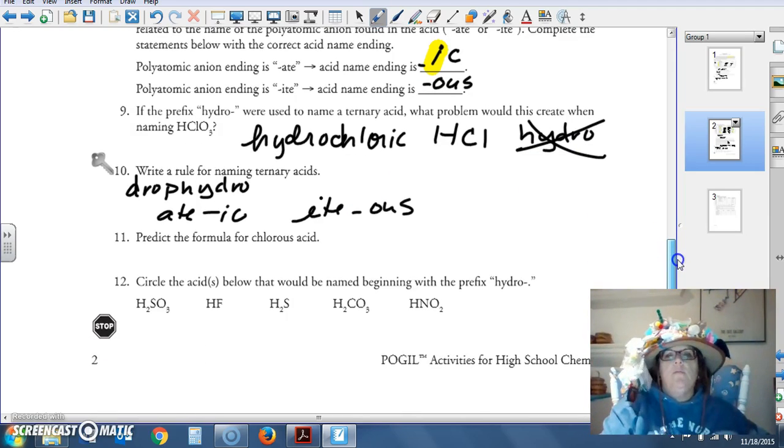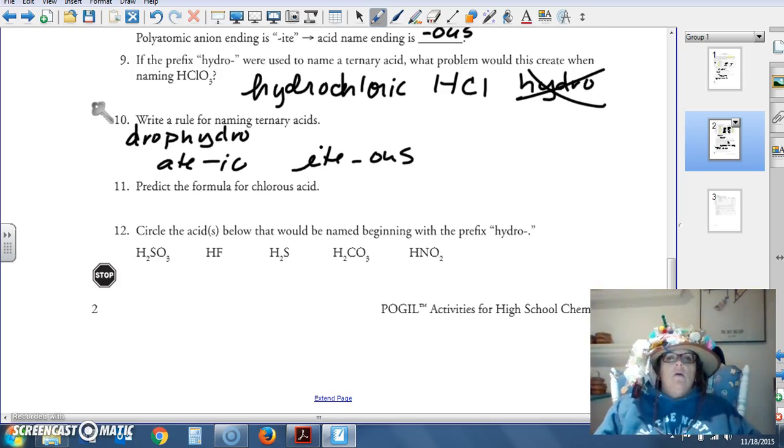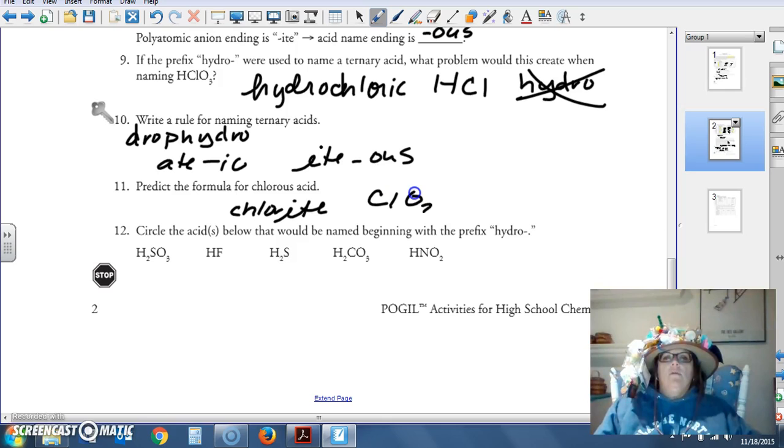Predict the formula for chlorous acid. Ous means it's going to end in ite. The chlor sounds like chlorite, which if you remember, was ClO2, negative 1.